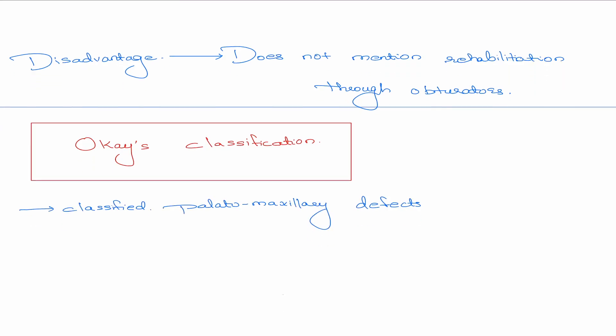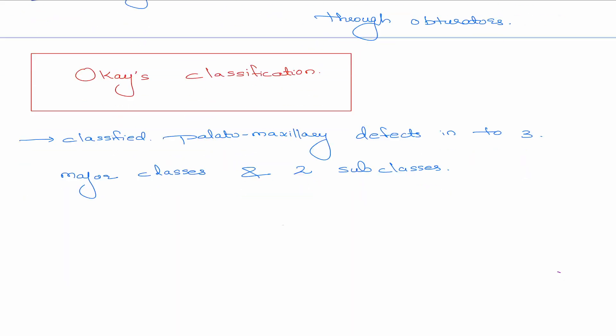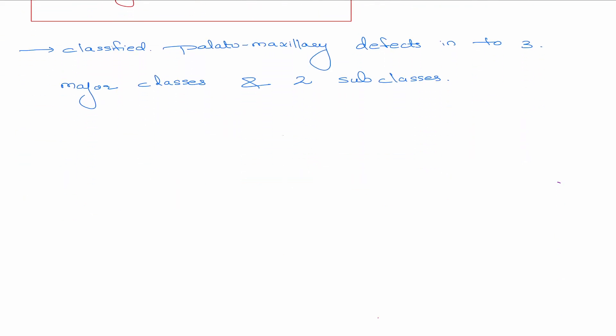In Ockay's classification, he classified the palatomaxillary defects into three major classes — class 1, class 2, and class 3 — and two subclasses, F and Z.